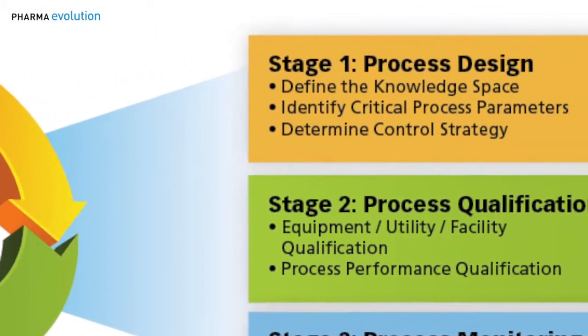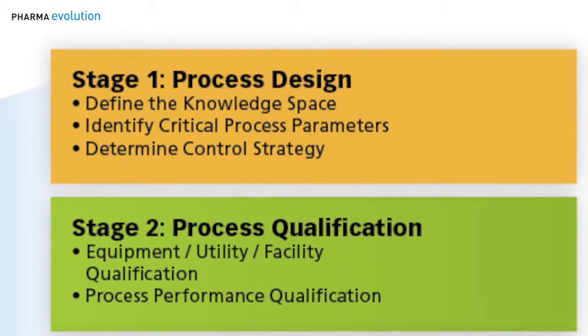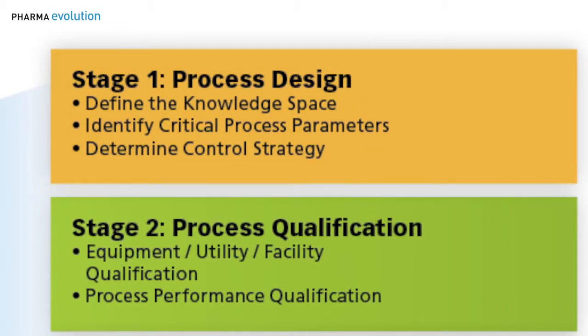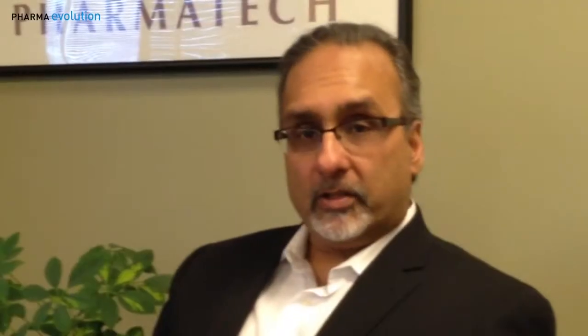In stage one, we're supposed to be evaluating the process design. By process design, I mean understanding the contribution of raw materials, equipment, and process parameters in terms of process stability, but most importantly, in terms of product performance. This is where we begin at small scale, at development, when we're looking at those parameters within our process which can have an impact on our product's performance.